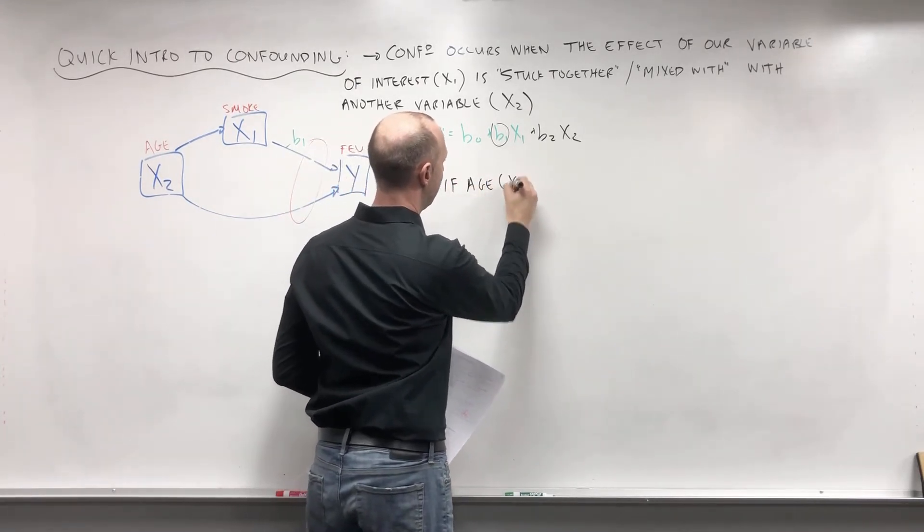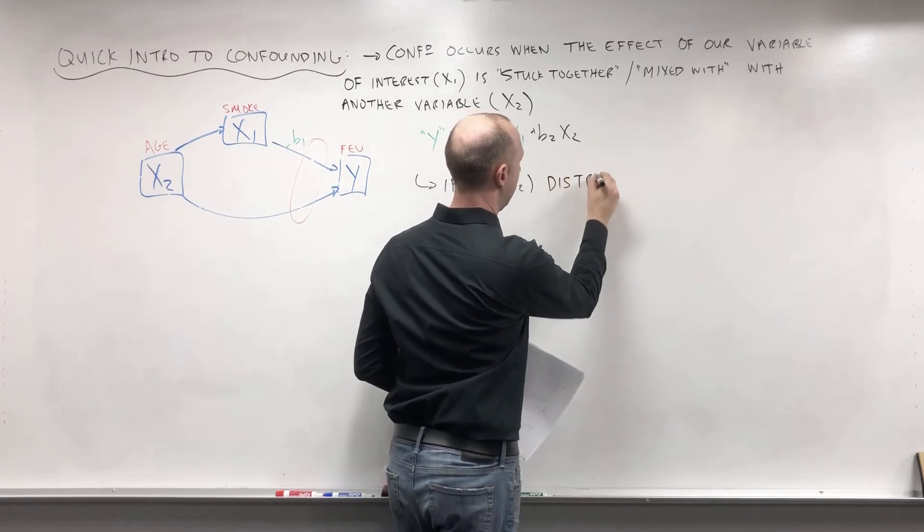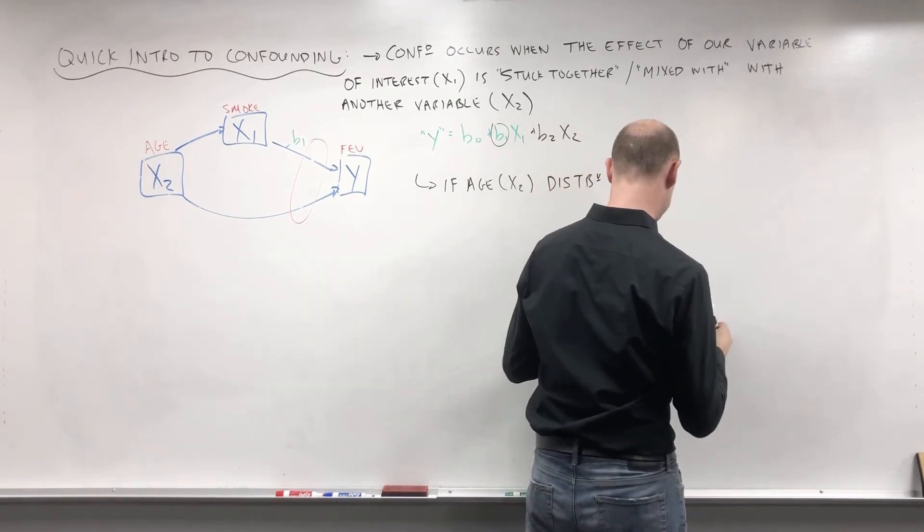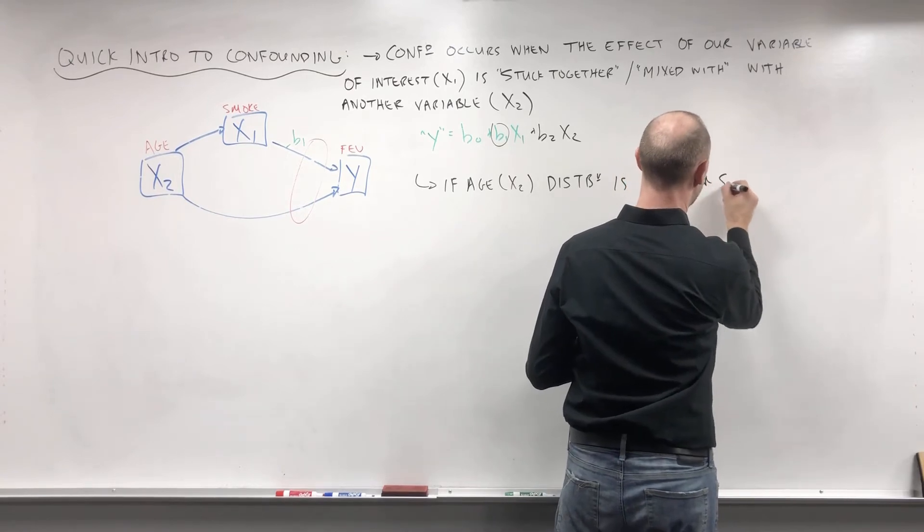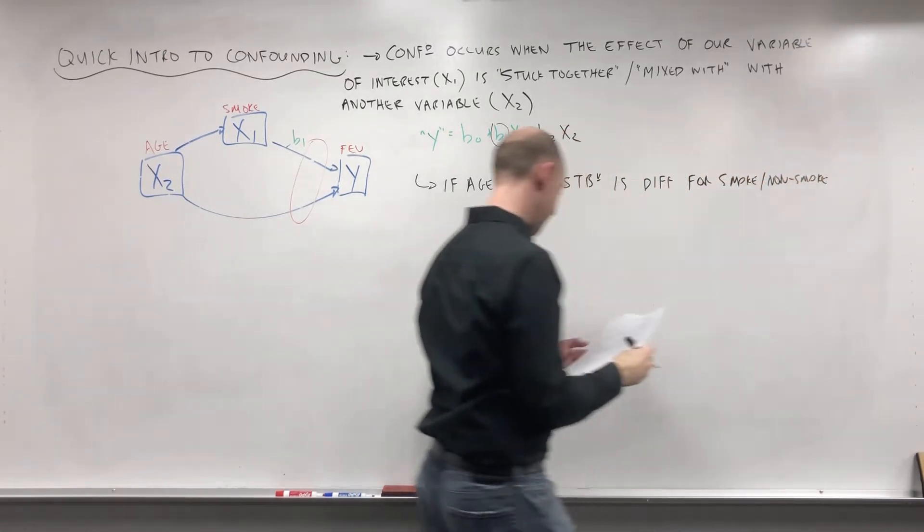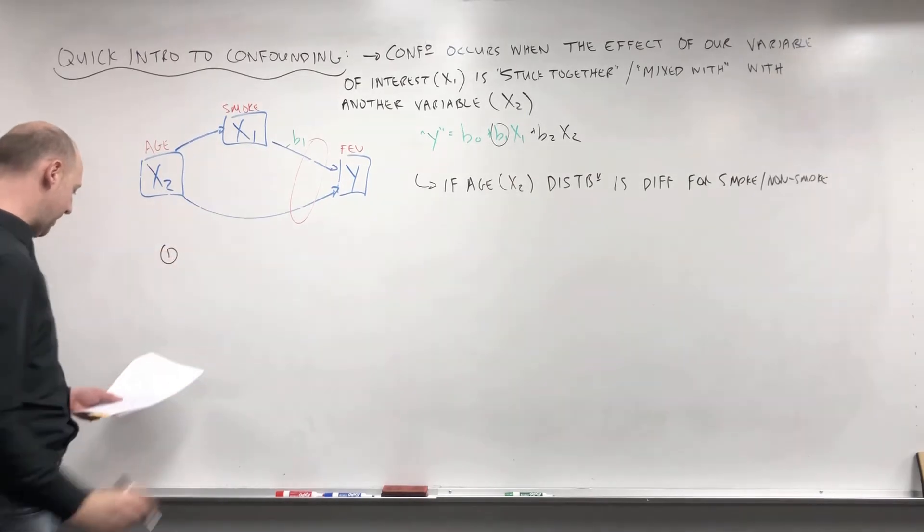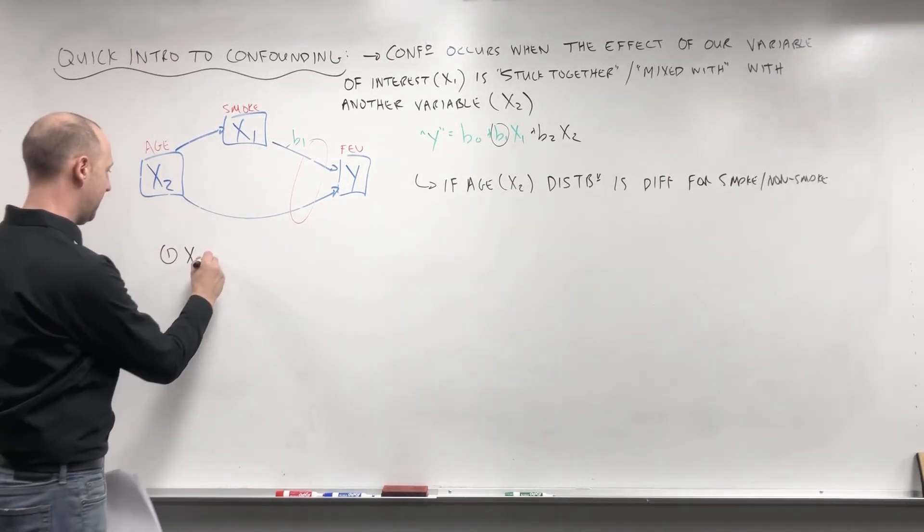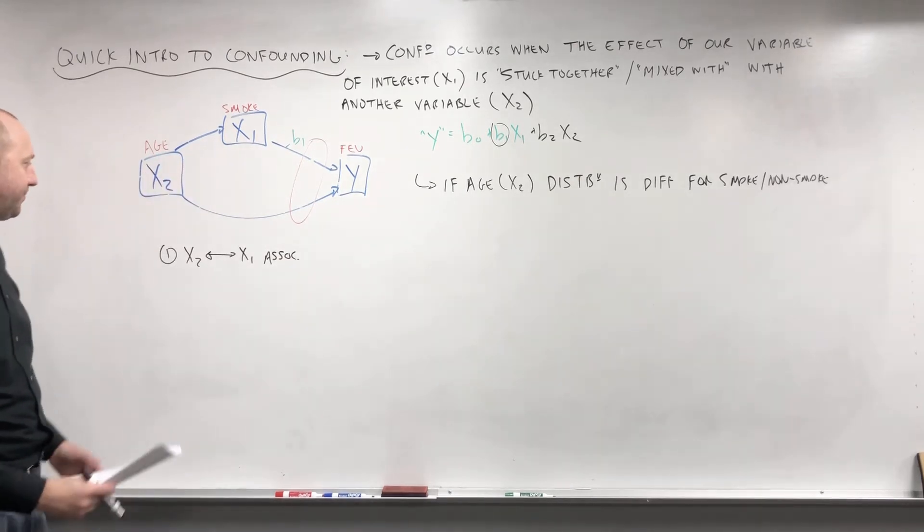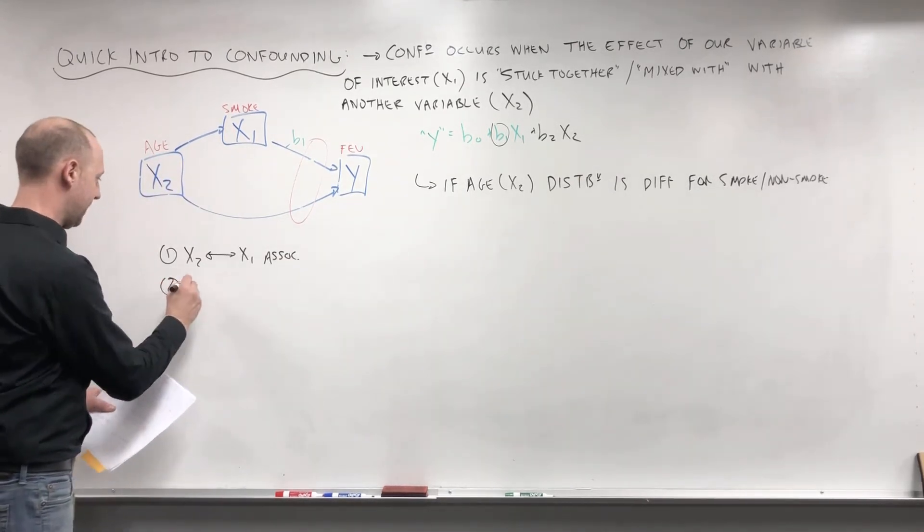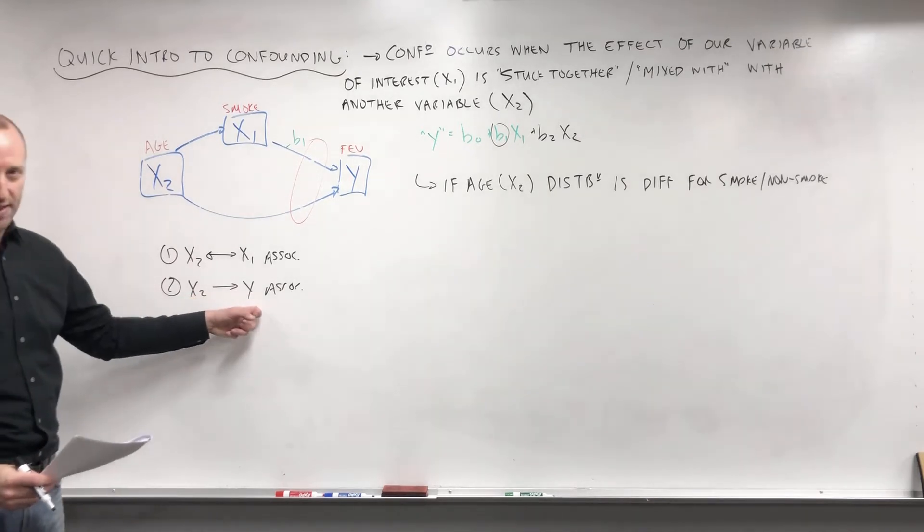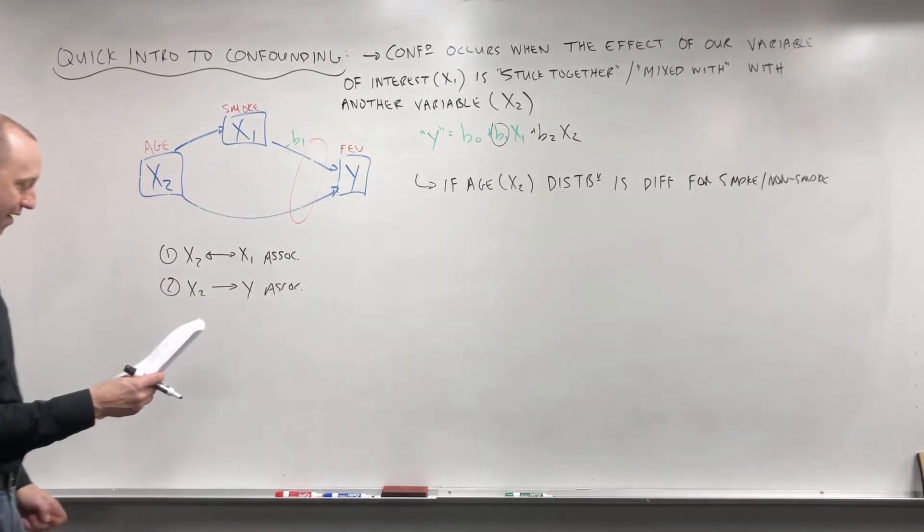So just to add to that, the way confounding can occur is in this example if the age or the X2 distribution is different for smoking and non-smoking. So some of the ways to identify confounding is when X2 and X1 are associated. So there's some association between X2 and X1. X2 is also associated with the outcome, so X2 has some effect on the outcome—age has some effect on FEV or lung capacity.